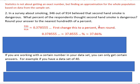So if we look at that, 346 divided by 914 is approximately 0.378555, and it keeps going. It says to round to the nearest hundredth of a percent. This number is not a percent right now, so don't round it yet — because what happens is people round that to 0.38 and then say 38%, which is not correct. You should not round before you actually have a percent. First change this to a percent, then round.